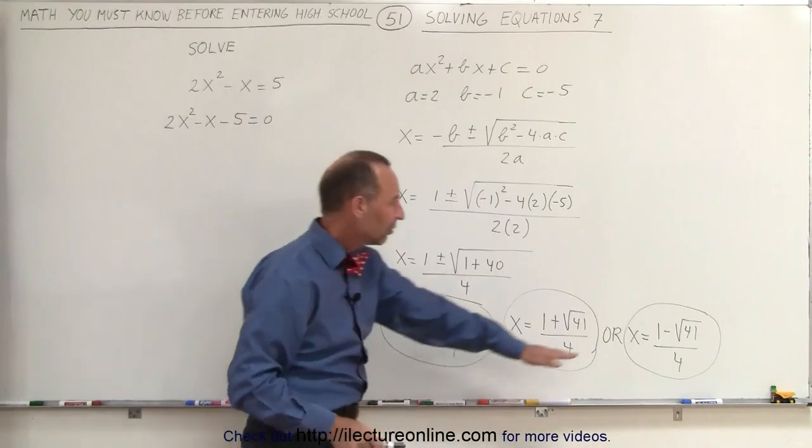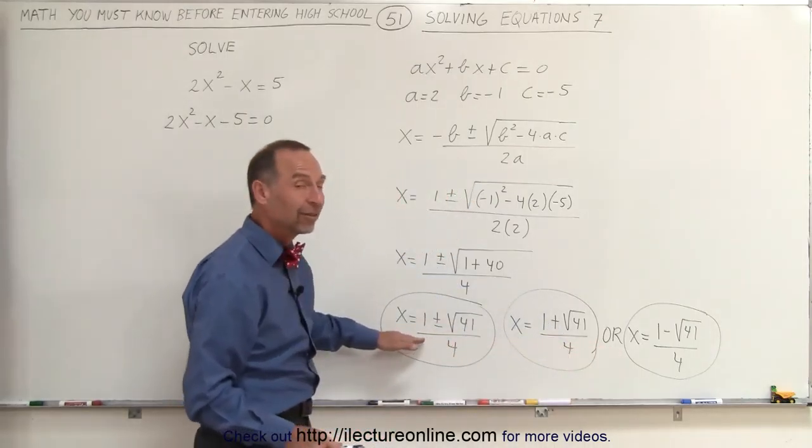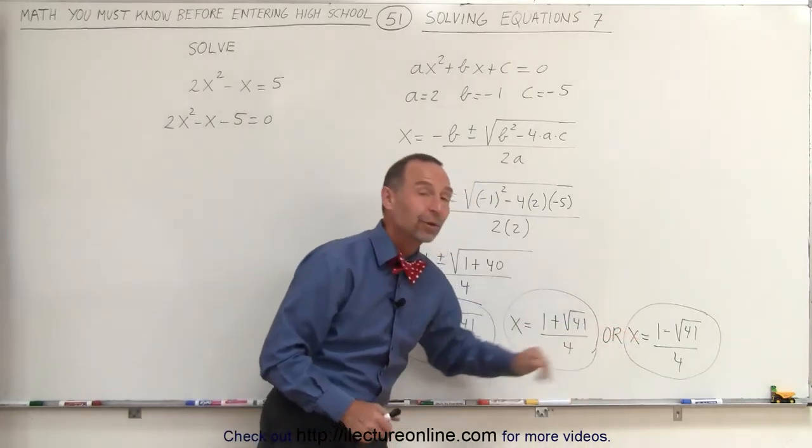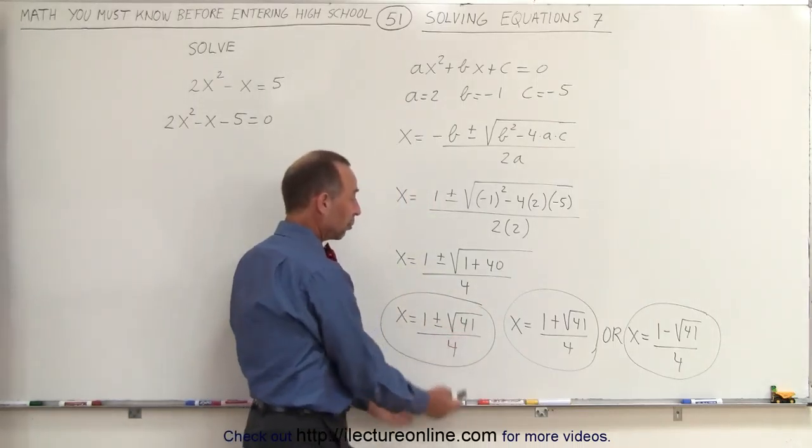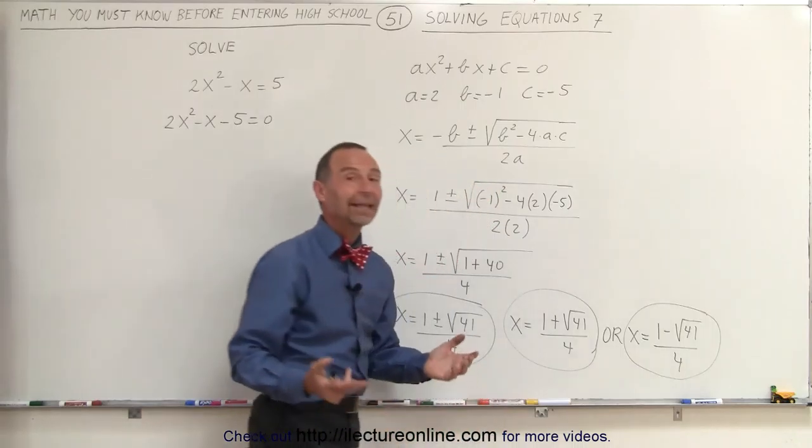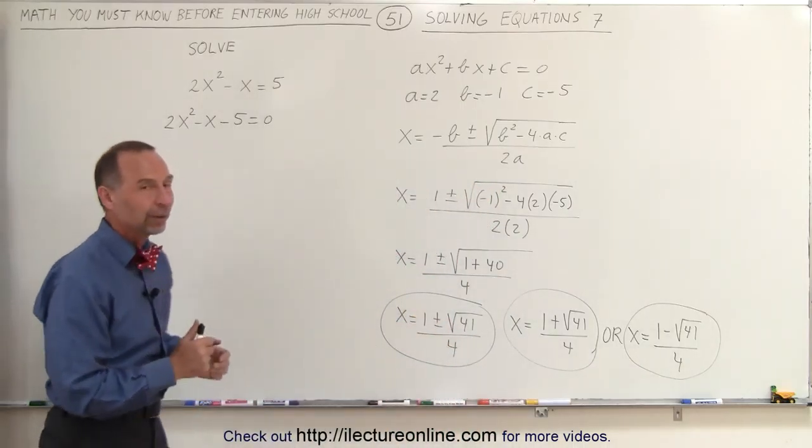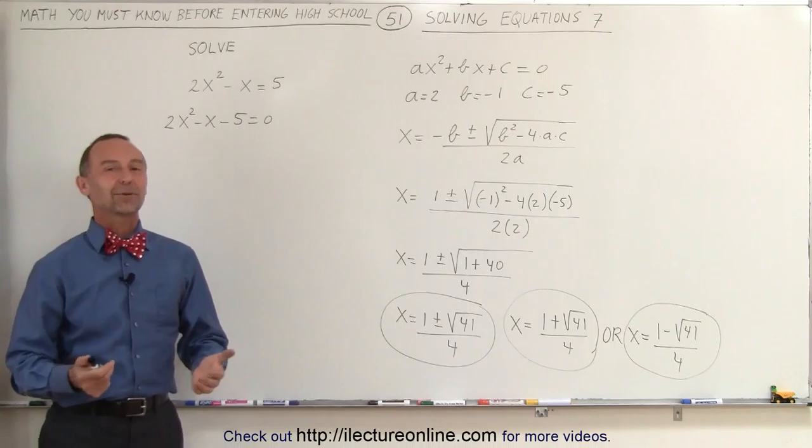We can either write it like this or we can leave it like that. This means the exact same thing as what we have written over there. Either form represents the solution to our original quadratic equation. And that's how it's done.